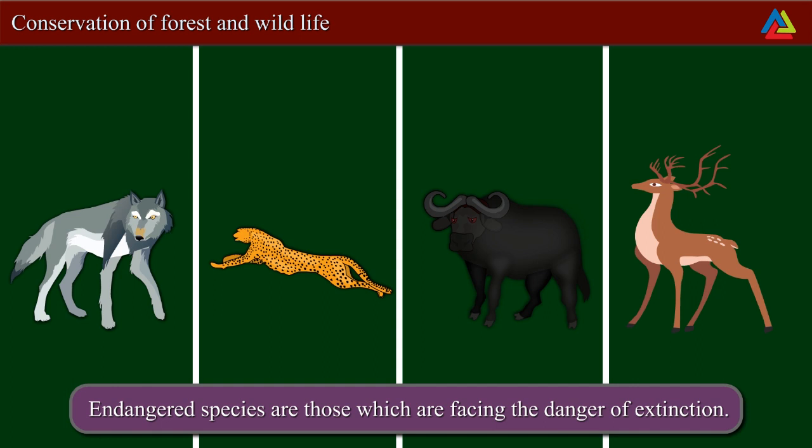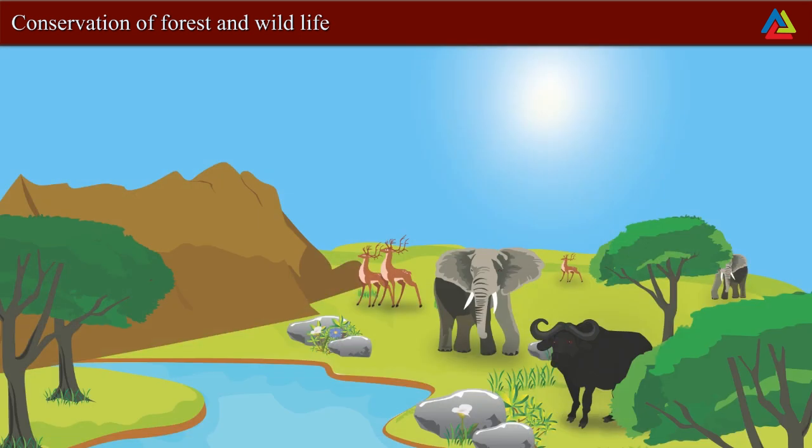These are endangered animals. Examples of endangered animals are wolf, leopard, wild buffalo and barasingha. An ecosystem is made of all the plants, animals and microorganisms in an area, along with non-living components such as climate, soil, and river deltas.